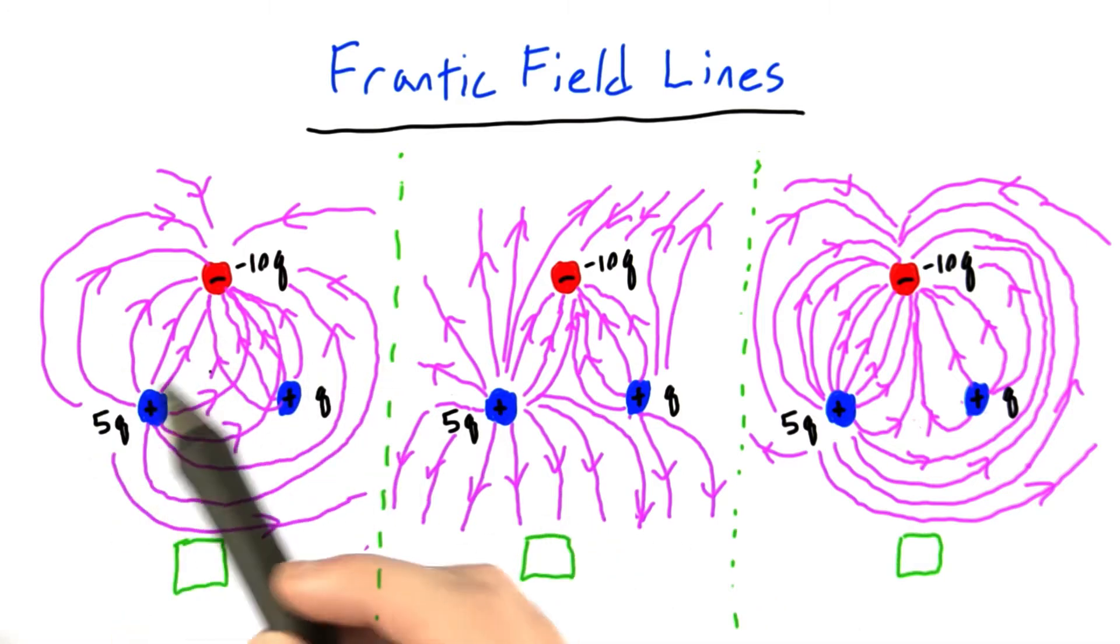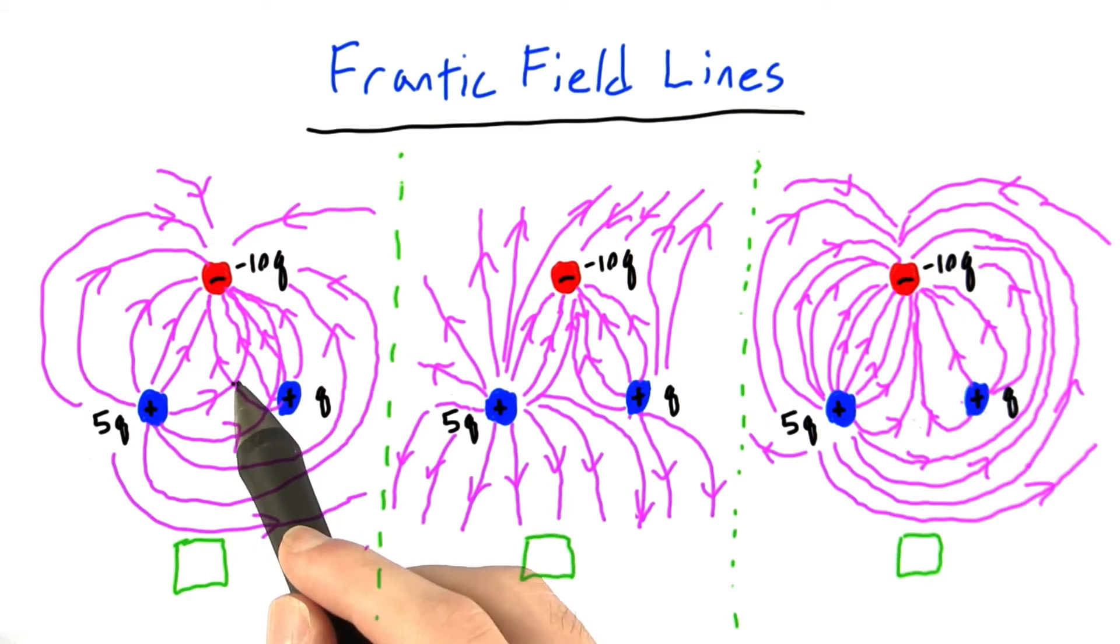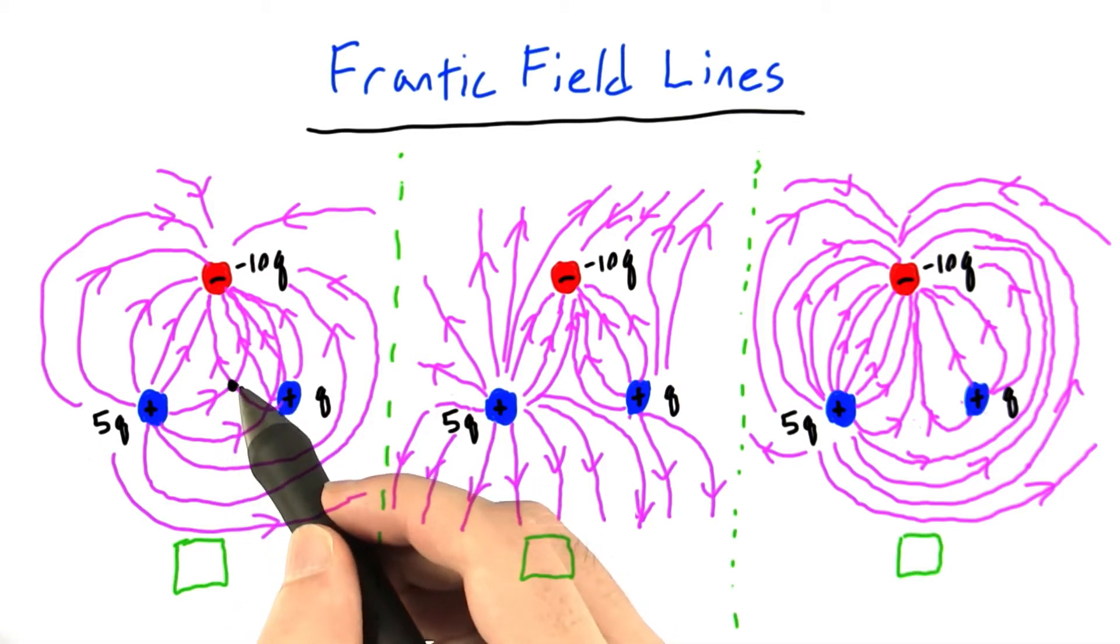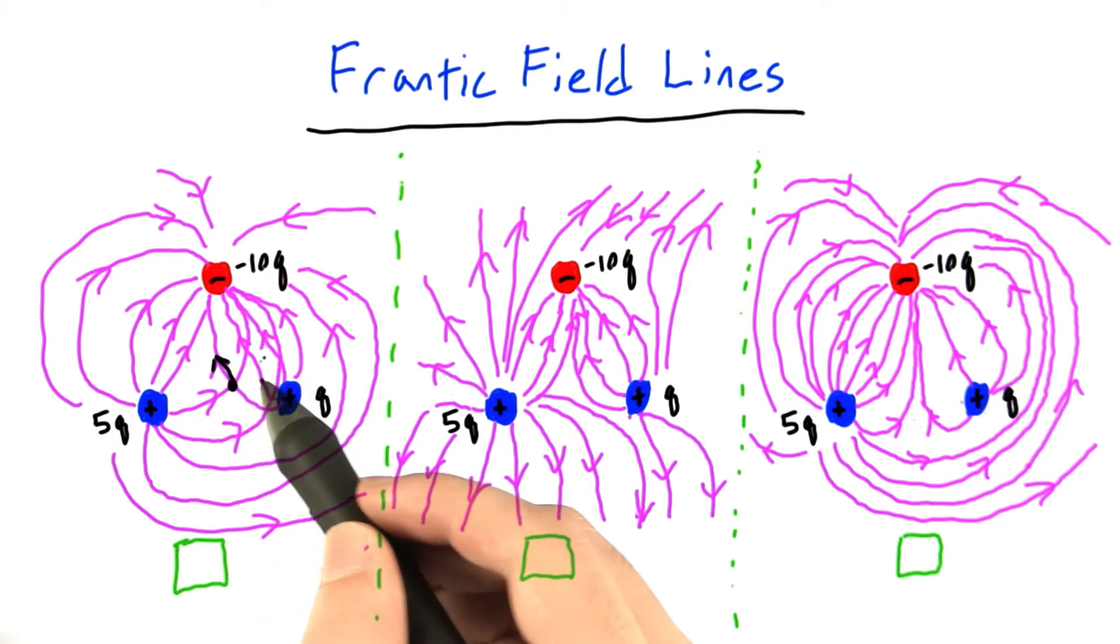So these field lines look pretty good. They all point from positive to negative charges. But something odd is happening right here. You'll notice here that two field lines are actually intersecting. So what would that mean if we had a particle right here in this electric field? Well, according to this field line, the particle should be pushed this way, assuming it's positive.